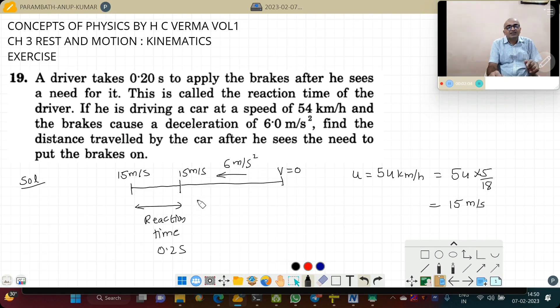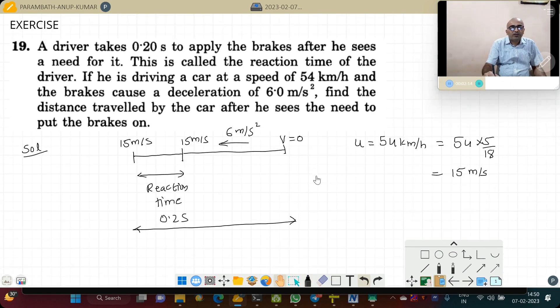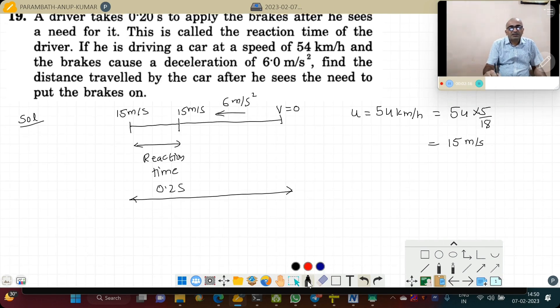So he is asking us to find the distance travelled by the car after he sees the need. That is, he is asking us to find this total distance. Students, with 15 m per second in 0.2 seconds, the displacement during reaction time will be 15 m per second speed into time taken 0.2 seconds, that is 3 m.